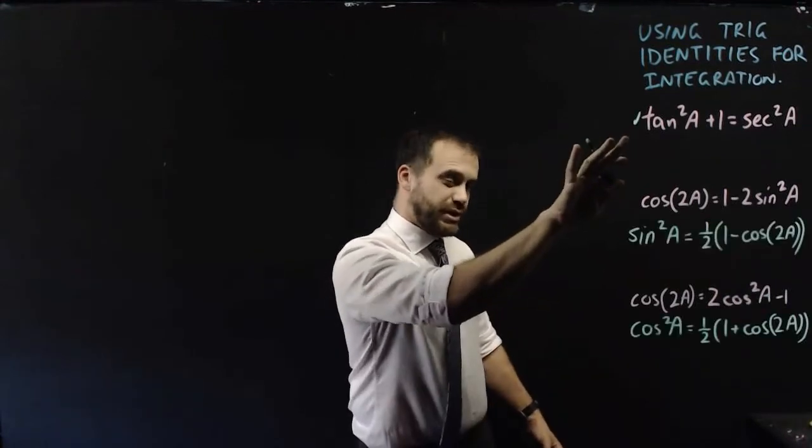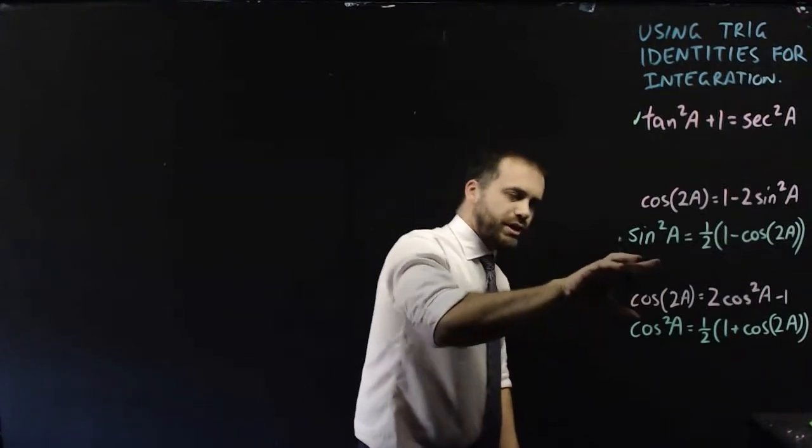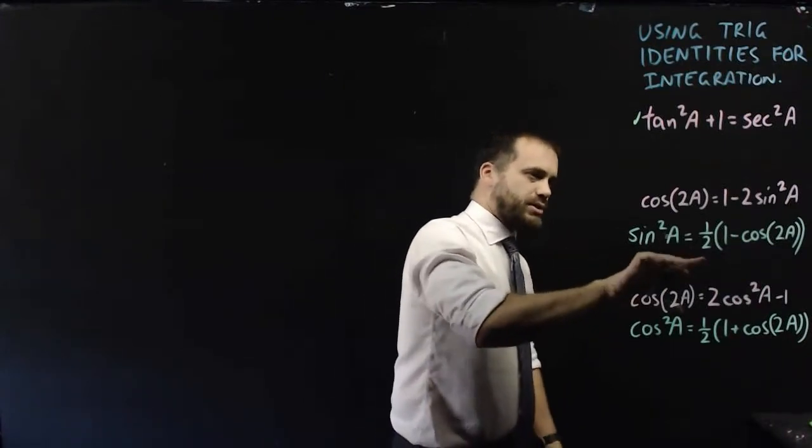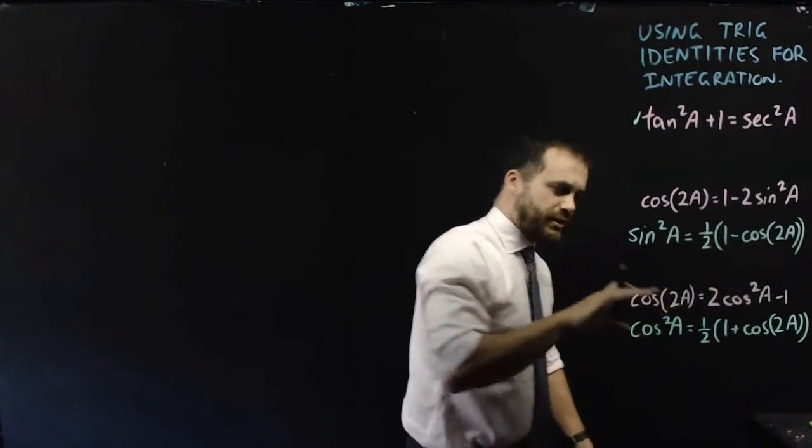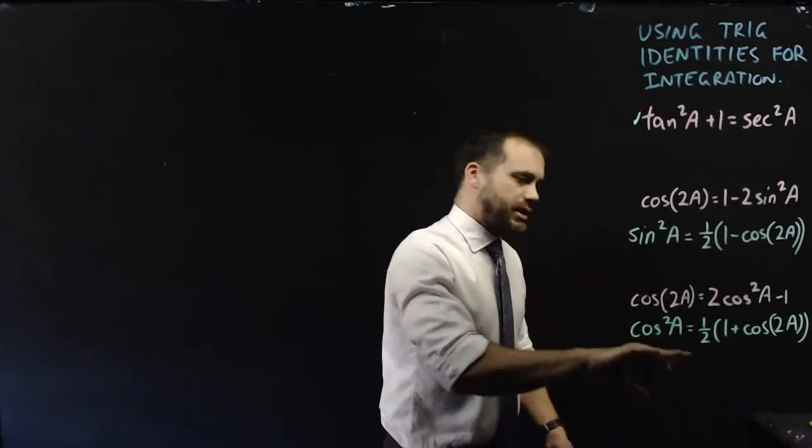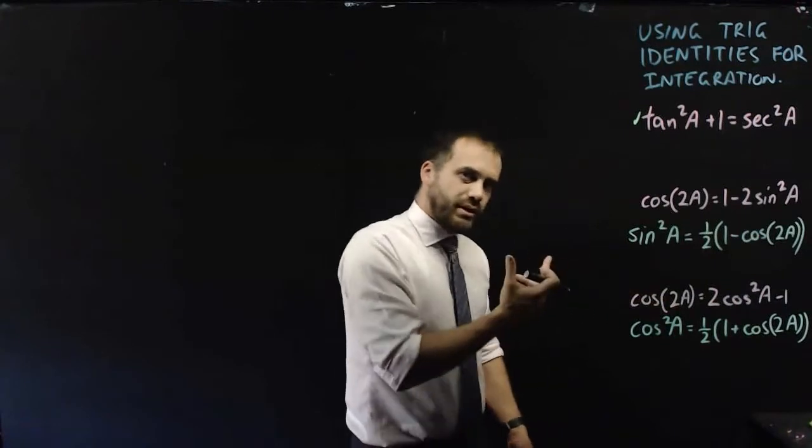This one's pretty useful, let's leave it how it is. But this one here, rearrange it so that it's sin²A equals half times one minus cos(2A). And this one here, rearrange it so that it's cos²A equals all of that.